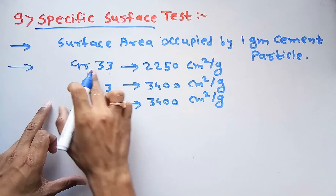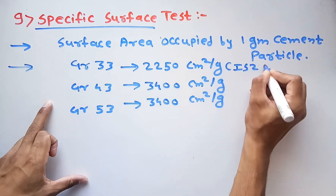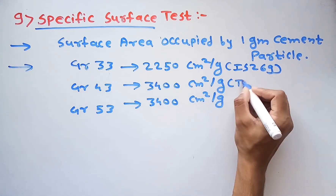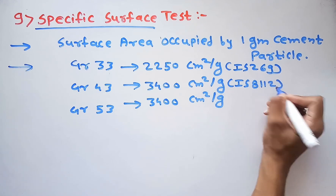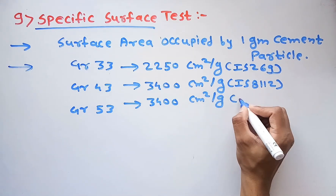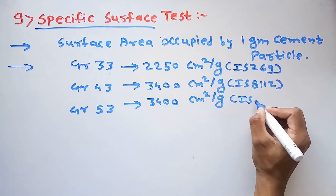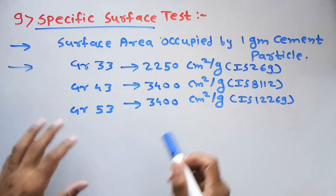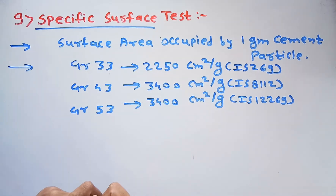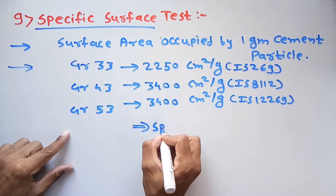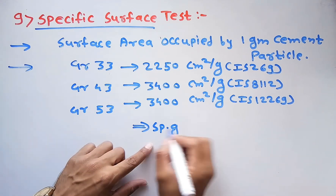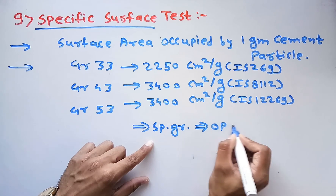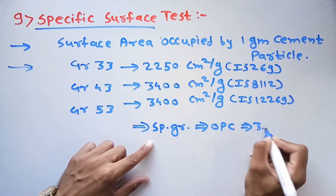Grade 33 is followed by IS 269, Grade 43 is followed by IS 8112, and Grade 53 is followed by IS 12269. Additionally, the specific gravity of OPC cement should be 3.1.